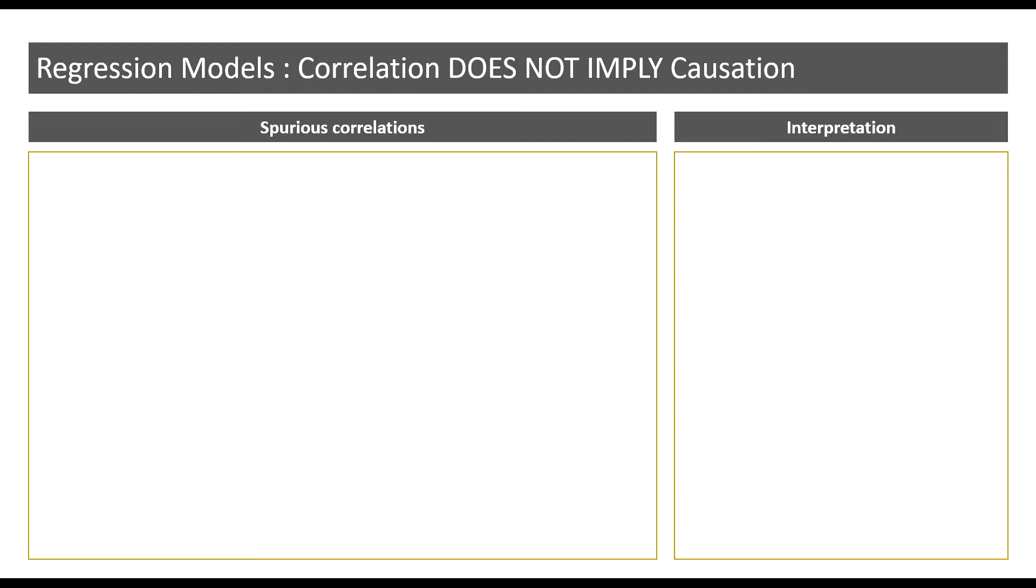Whilst correlation can help measure the degree of association between variables, we cannot infer anything more. Causation cannot be directly inferred from correlation.